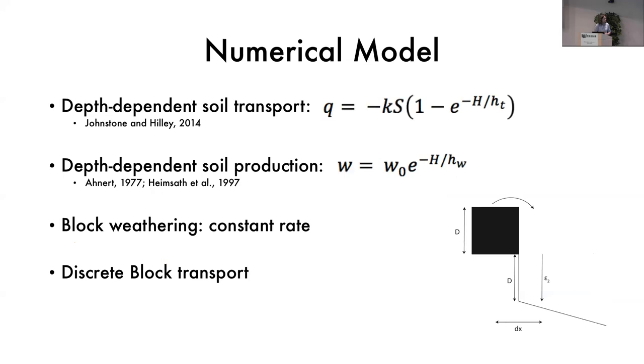We developed a pretty simple numerical model of hillslope evolution that's kind of a hybrid continuum discrete model. For the continuum part, we have a rule for soil transport where soil moves in a diffusion-like way according to the topographic slope, modified by how much soil you have. So if you have no soil, there's no soil flux, which is good. If you have a lot of soil, then more of it moves. We also have a depth-dependent soil production rule. So bedrock turns into soil at a rate that's dictated by the soil thickness. If you have thin soil, it happens faster than if you have thick soil.